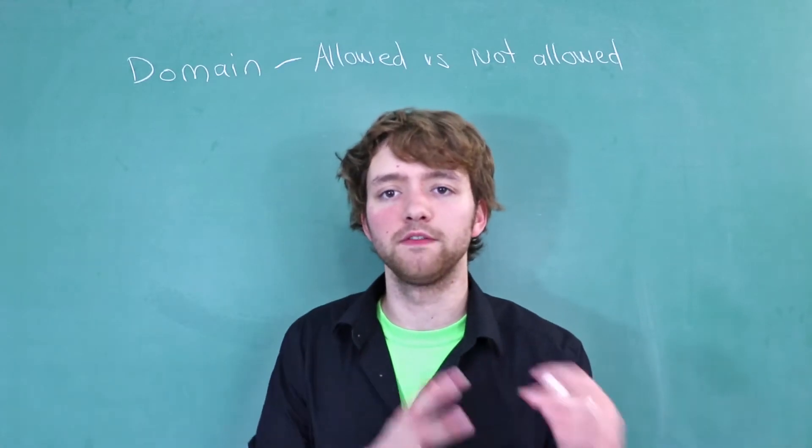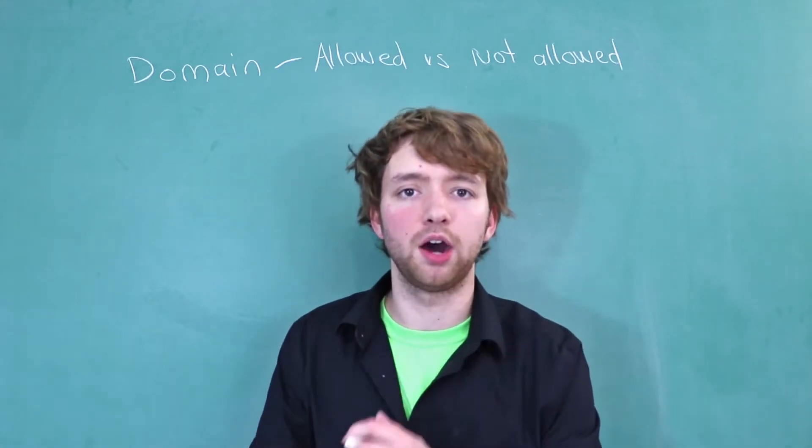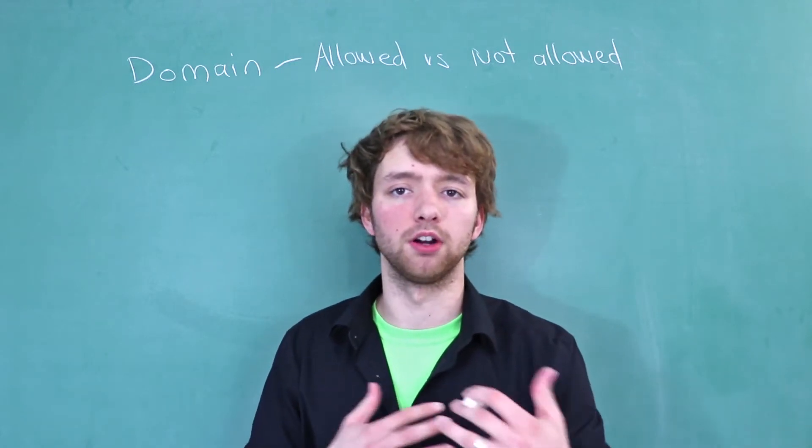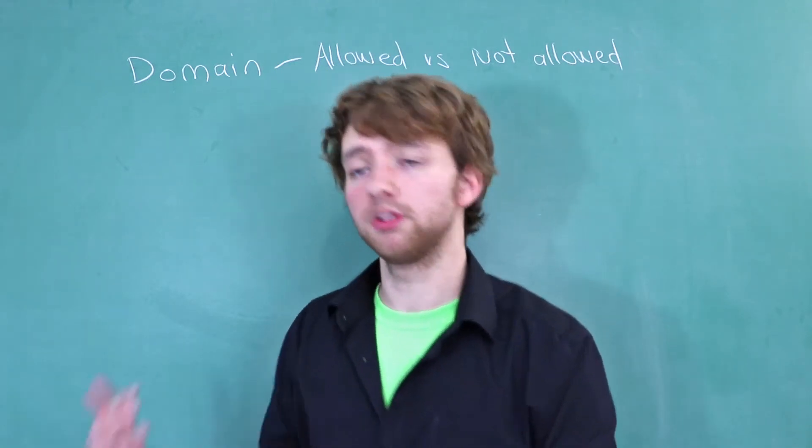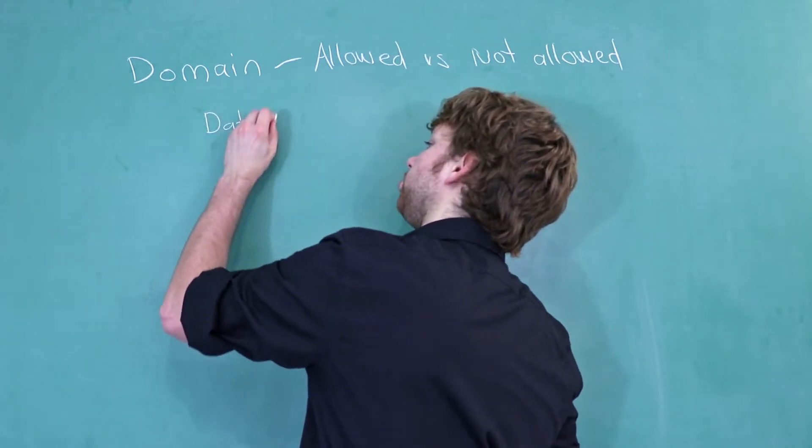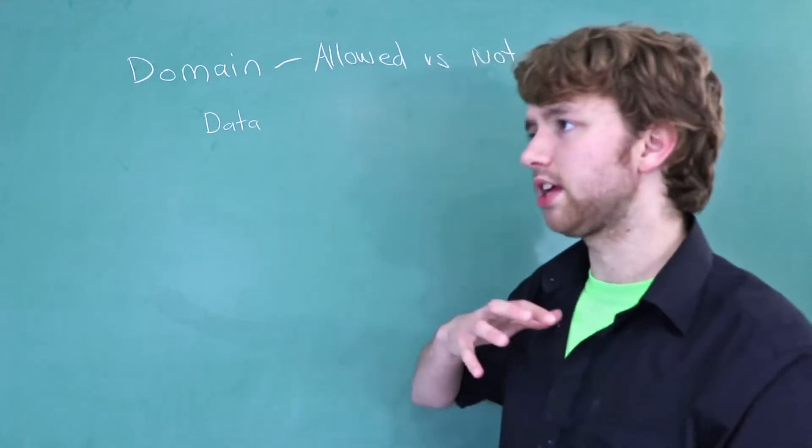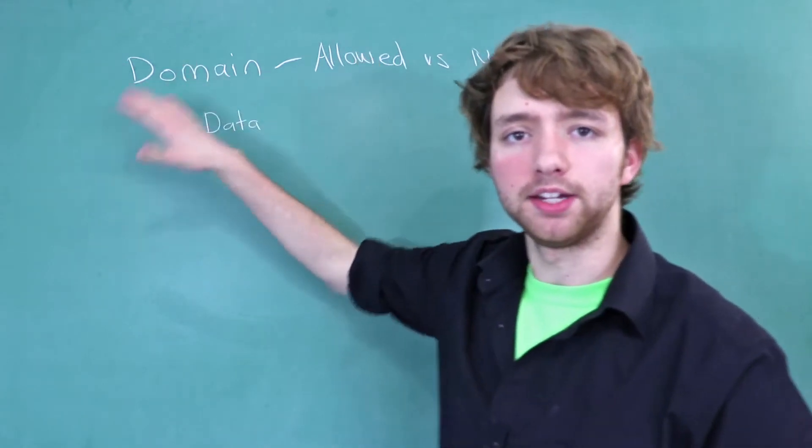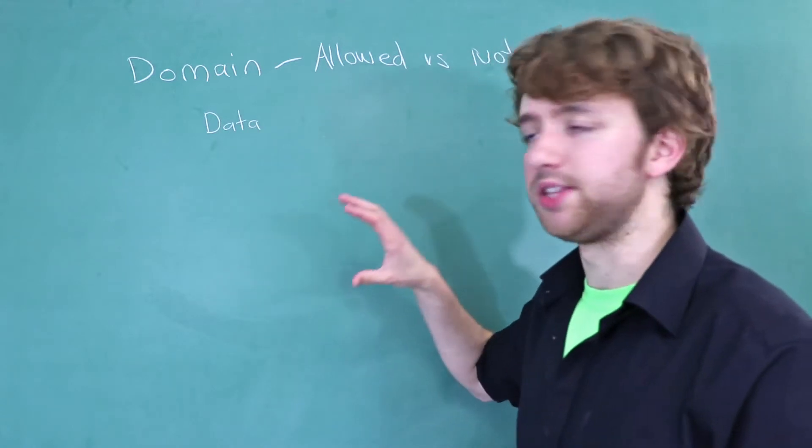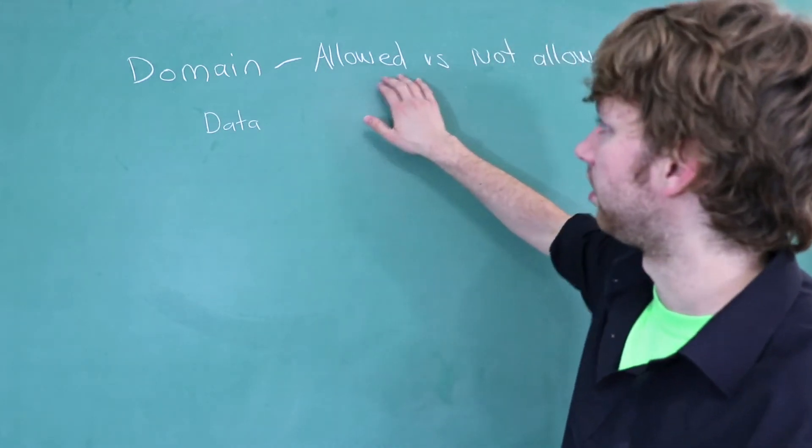So there are numerous ways we can enforce what data is allowed in a specific column. Some of these are very general ways that are allowed in most database systems. For example, data types are a very great way to have domain integrity. So let me take a step back. If we have domain integrity, what we are saying is that our data is within the allowed values.